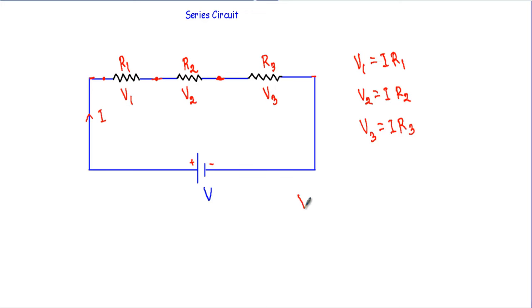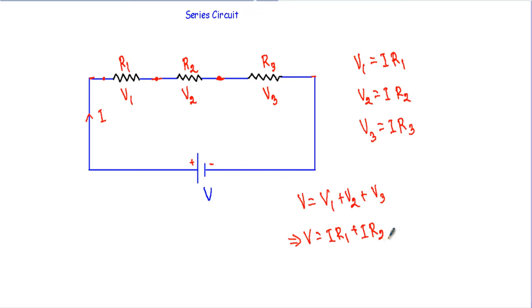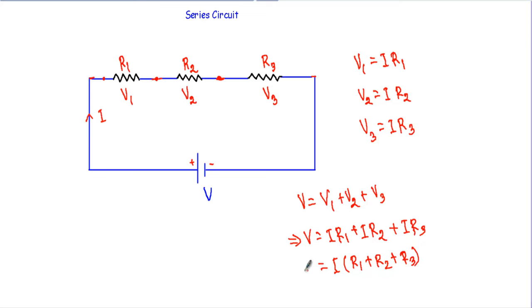Therefore, the supplied voltage equals the sum of absorbed voltages: V equals V1 plus V2 plus V3. Substituting, V equals I·R1 plus I·R2 plus I·R3. Since I is common in all three terms, I can factor it out: V equals I times the quantity R1 plus R2 plus R3.